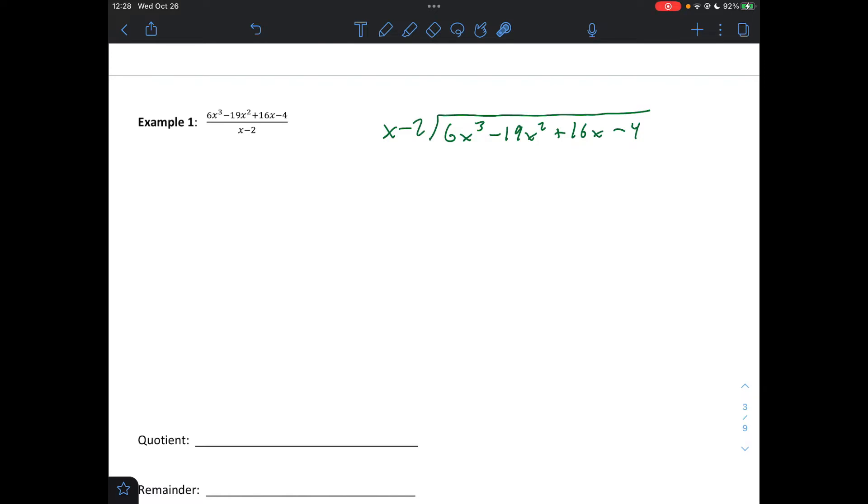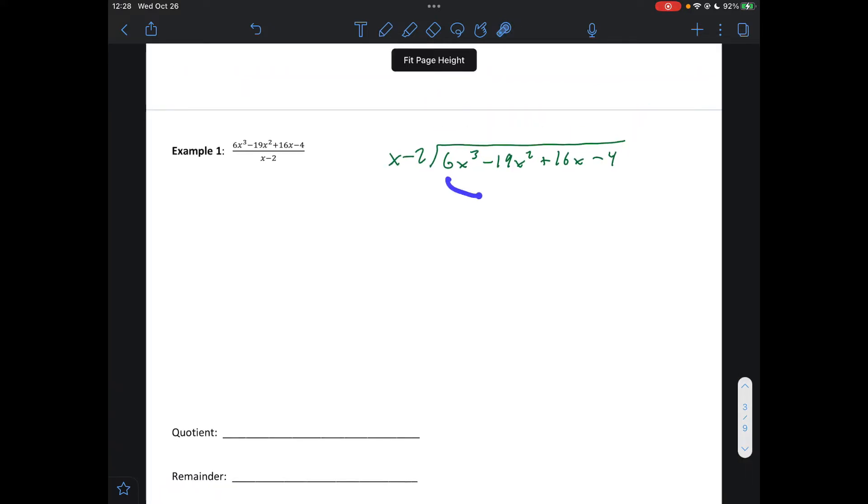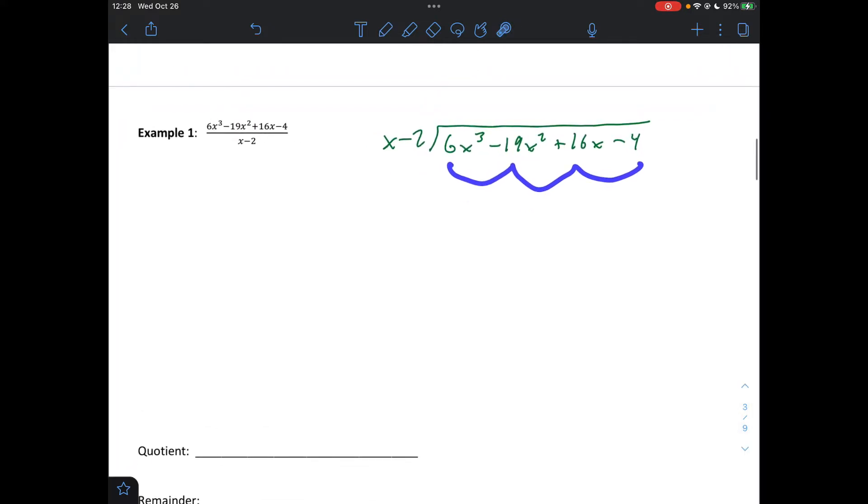All right. What do I mean by that? Let's say this 16x wasn't here. You would not want to just skip that there. You'd want to put a plus 0x right there. Okay. So we'll see why when we do one later on today that it's missing something. But this one is not missing any terms. It's x cubed, squared, first power, and then nothing. They're constants, so we're good.